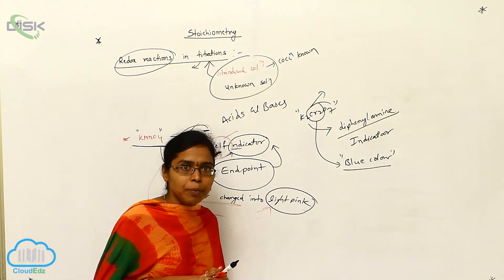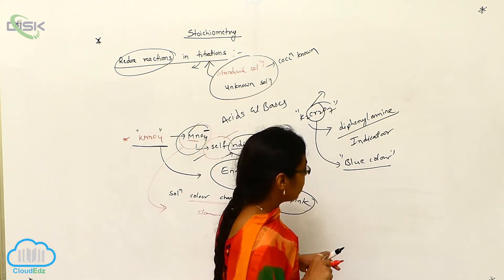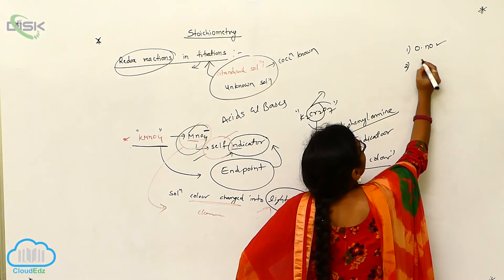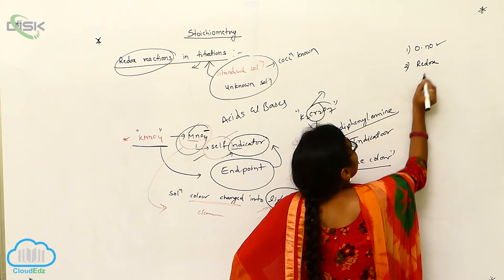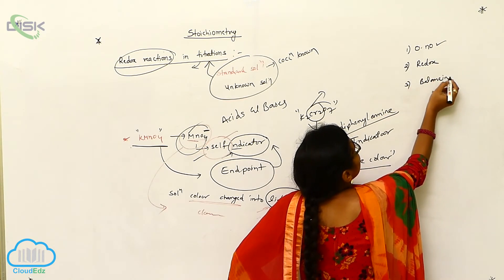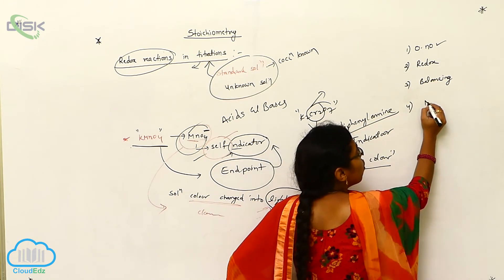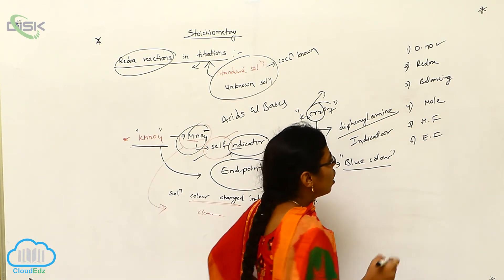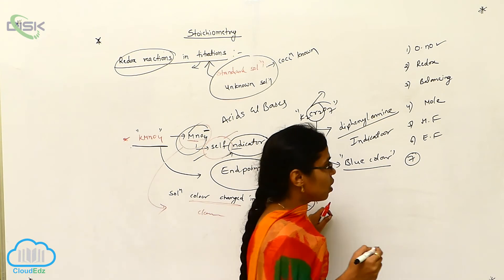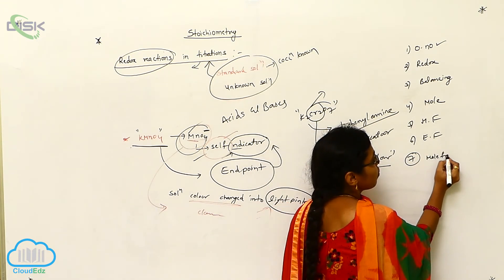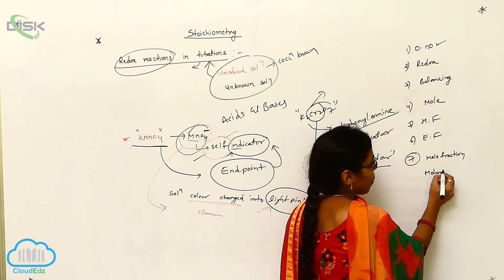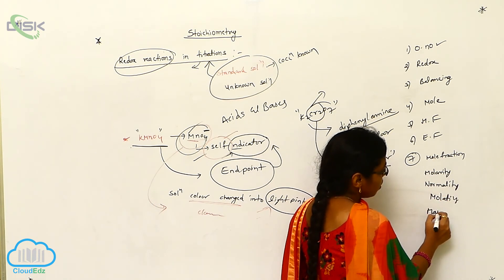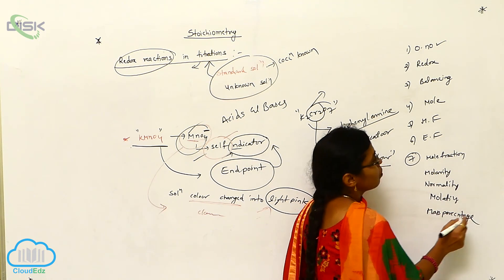This is our total stoichiometry. In stoichiometry, we discussed oxidation number, the law, redox reactions and balancing, and also the mole concept. We completed molecular formula and empirical formula, their relationship, and concentration terminologies — which include mole fraction, molarity, normality, molality, and mass percentage.